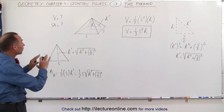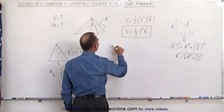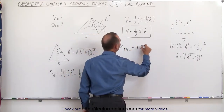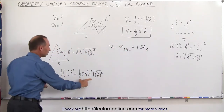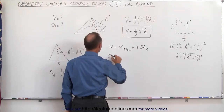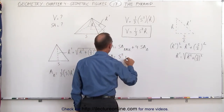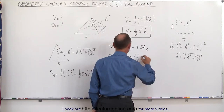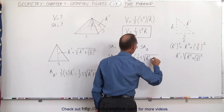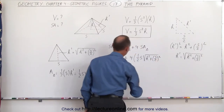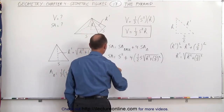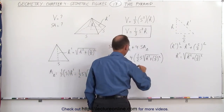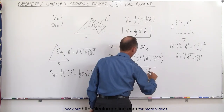Now we're ready to find the surface area of the entire pyramid. The surface area of the pyramid equals the surface area of the base plus 4 times the surface area of each of the triangles. So the surface area equals s squared plus 4 times one-half s times the square root of h squared plus the quantity half of s squared. Simplifying — since we have a 2 and a 4 — the surface area equals s squared plus 2s times the square root of h squared plus the quantity s over 2 squared.